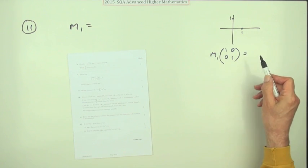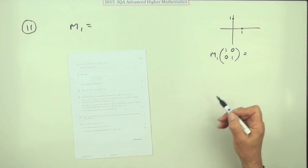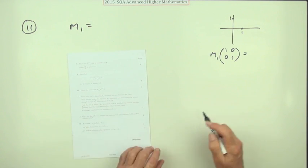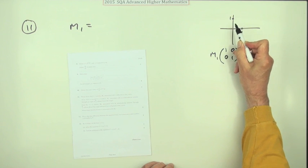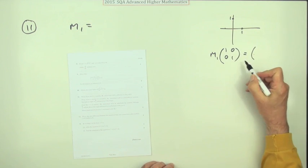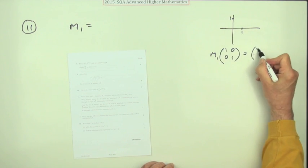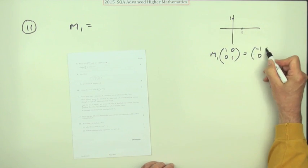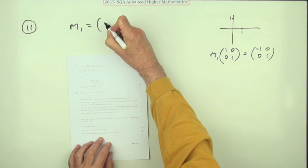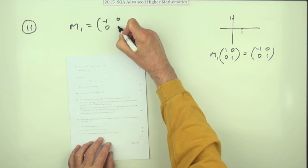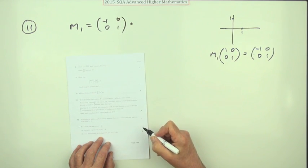If you multiply it by something like m1, whatever your answer is is the matrix. What's m1 doing again? Reflecting in the y-axis. Well this would go over to here, so one zero would go to negative one zero. That would stay where it is, so that's your answer: negative one zero, zero one. That's a mark just for stating it.